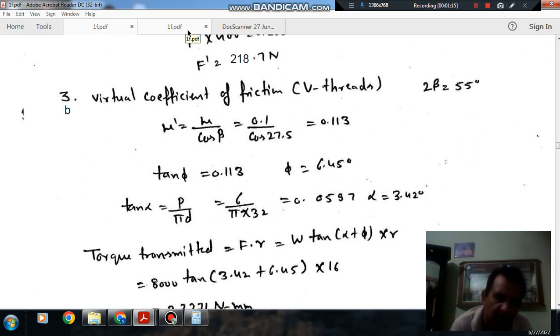So here, as it is the case of V-thread, the coefficient of friction we have to take is virtual coefficient of friction. As the angle of V-thread is 2 beta, that is 55 degrees, virtual coefficient of friction is mu divided by cos beta. So mu is 0.1 and cos beta is 27.5, so virtual coefficient of friction is 0.113.